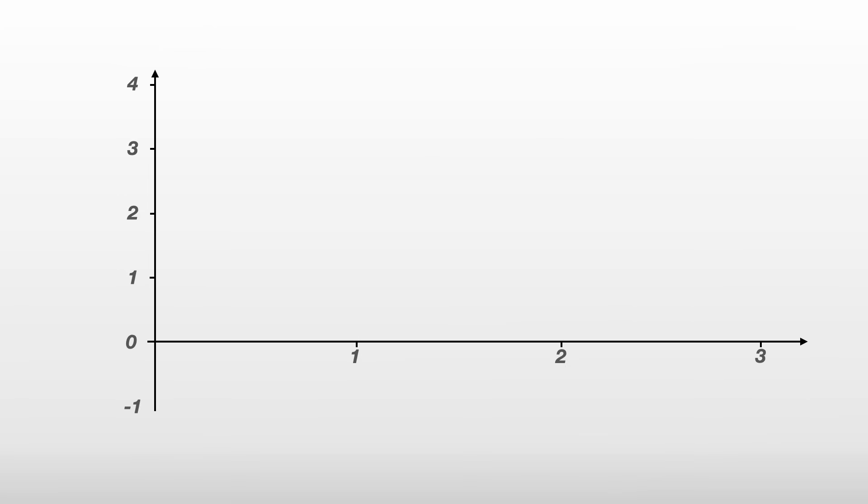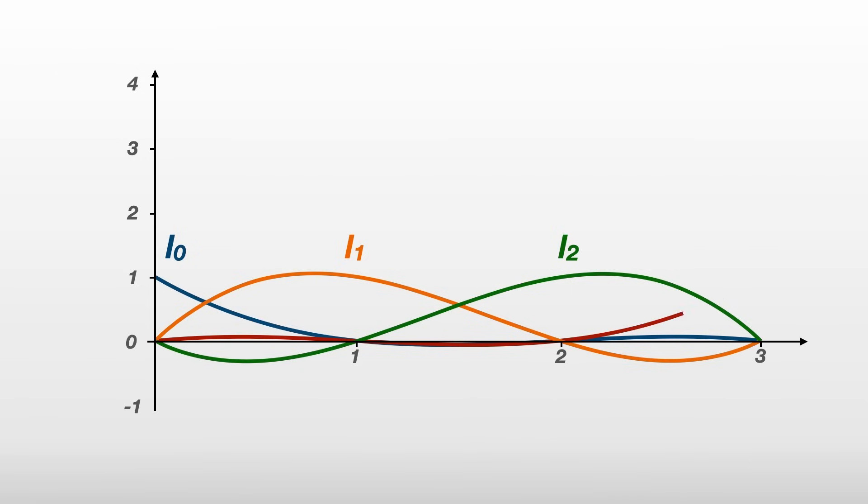It does this by first creating a set of polynomials, each associated with a particular node, and they're made in such a way that the first polynomial L_0 is equal to 1 at the first node and 0 at all the others.